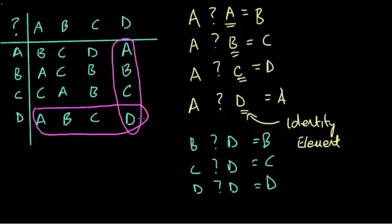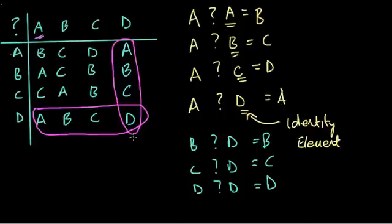The row is a little trickier, but there are two ways to look at it. If we read it in the opposite direction — A question mark D gives A, B question mark D gives B, C question mark D gives C, and D question mark D gives D — that's reading the table in the opposite way, using the row first then the column. You can see it should mirror the exact same order: A, B, C, D.